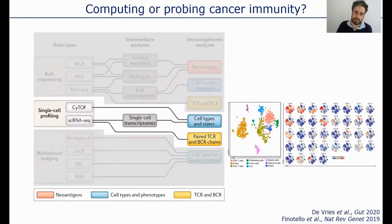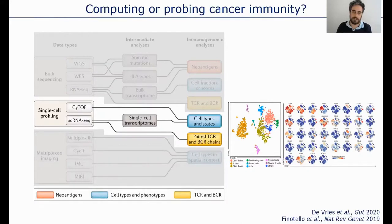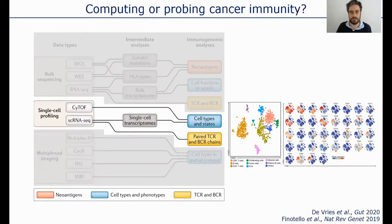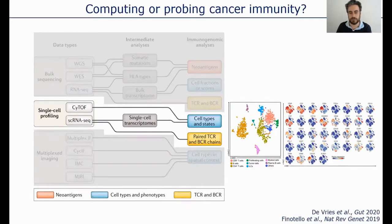More recently, single-cell sequencing and other single-cell technologies have really been a major breakthrough, providing us with the ability to characterize in detail the phenotype and also genetic features of single cells. However, one must not forget that such techniques do not capture the spatial context of cells, and there are biases associated with our ability to retrieve certain immune cells from tissue — particularly when talking about solid tumors, where it can be quite challenging to retrieve all cells contained within the tumor microenvironment.